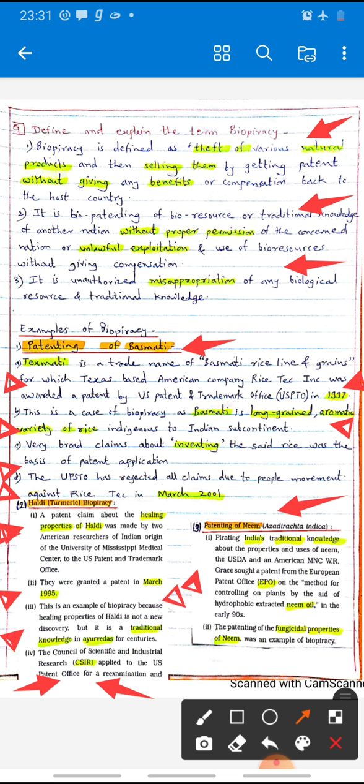In the early 19th century, the patenting of fungicide properties of neem was an example of biopiracy because neem was traditionally used in India. So these are examples of biopiracy: haldi, basmati, and neem.